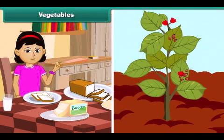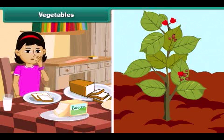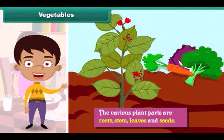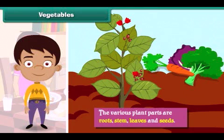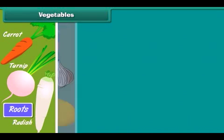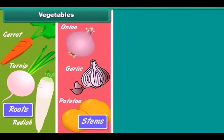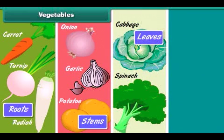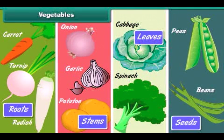We get our food from plants. The various parts of a plant are eaten as vegetables — roots, stem, leaves and seeds. Carrots, turnips and radish are roots. Potatoes, onions and garlic are stems. Spinach and cabbage are leaves. Peas and beans are seeds.